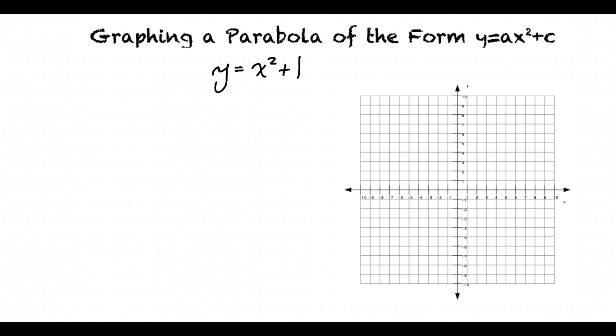In this case, a is 1, and c is also 1. In this form of a parabola, the vertex will be at 0 comma c, and the y-intercept will also be at 0 comma c, because when we substitute x equals 0 into the function, we see that c is the y value.